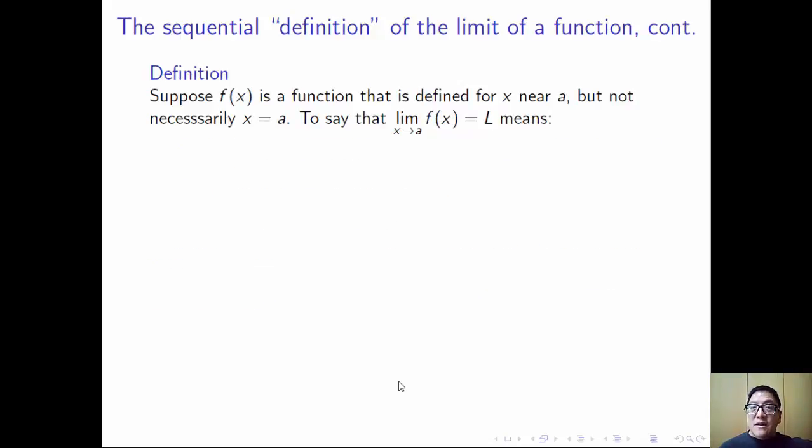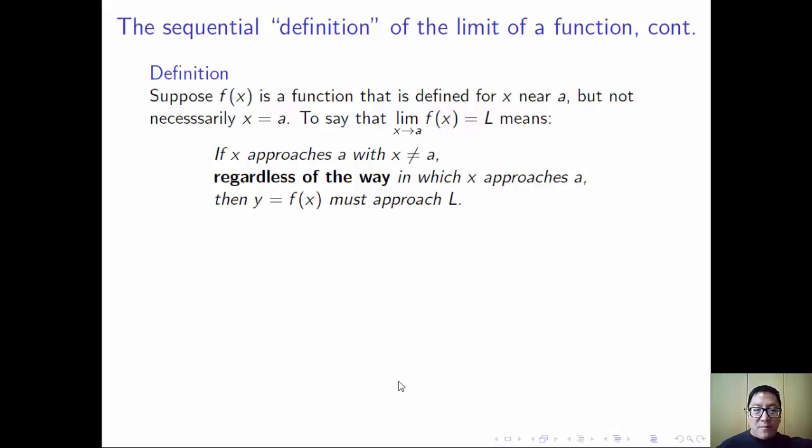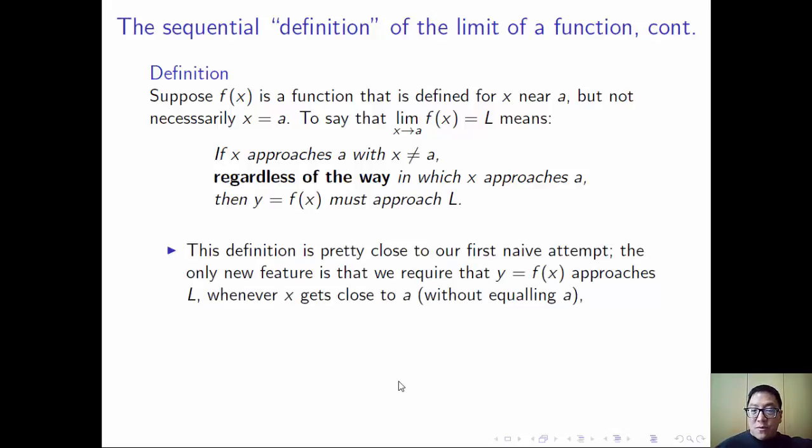So here is what we'll take as an operational definition of the limit of a function. So definition, suppose f(x) is a function that is defined for x near a, but it's not necessarily at x equals a. So to say that the limit of f(x) is x approaches a is equal to l means that if x approaches a with x not equal to a, regardless of the way in which x approaches a, and that's the key sentence there, regardless of how x approaches a, then y equals f(x) must approach l.